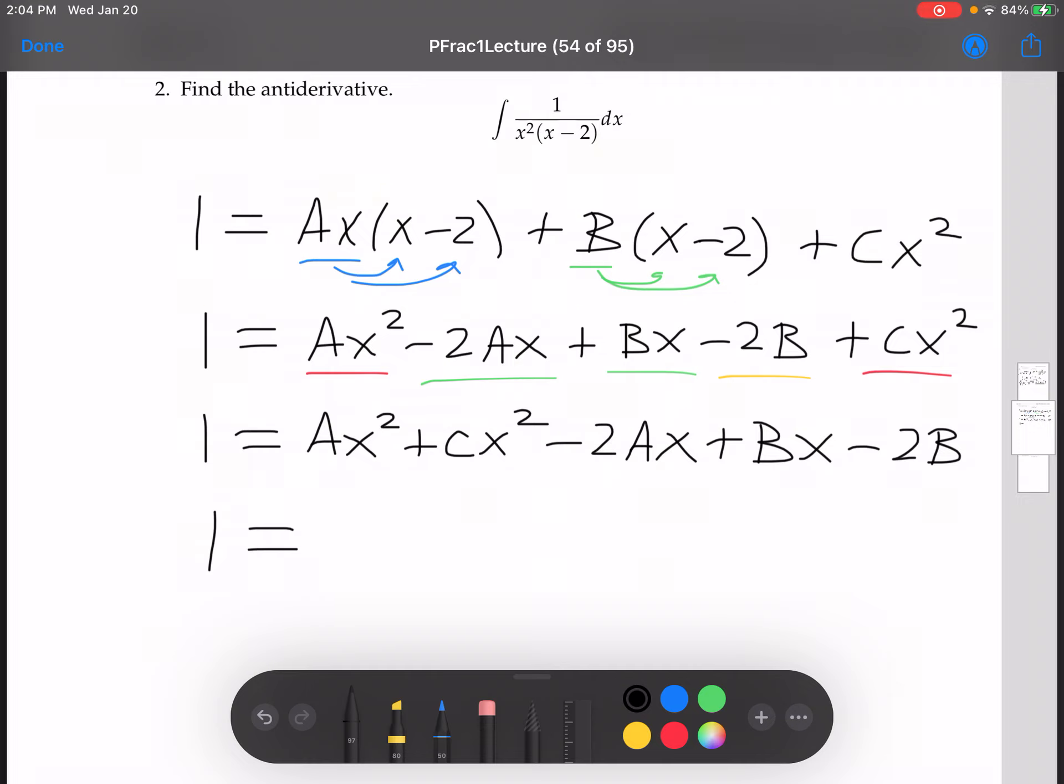And now I'm going to use the distributive property in reverse to write this as A plus C times x squared, negative 2A plus B times x.